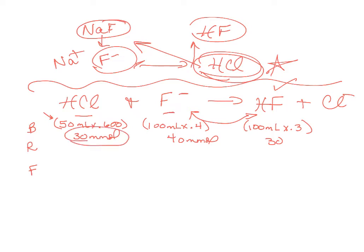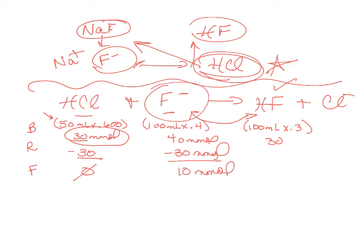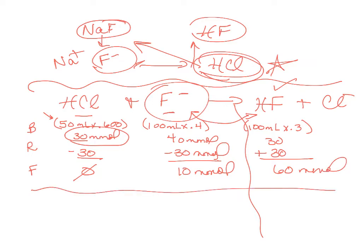Whatever is the smaller amount is the limiting reactant and gets used up. All of the acid reacts so you have none of the contaminant left — that's the point of a buffer: it gobbles up contaminants. It consumes considerable conjugate base but you still have 10 millimoles of F minus left, and you'll have 60 millimoles of hydrogen fluoride. Now you've done your mole table and since you're still dealing with a buffer, use Henderson-Hasselbalch.